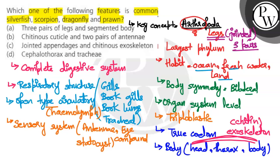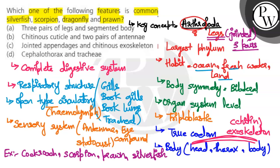Examples of Arthropoda phylum include cockroach, scorpion, prawn, and silverfish — the name says fish but it is actually an insect — and dragonfly. These are all examples of phylum Arthropoda.